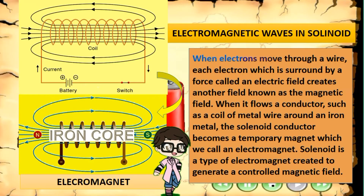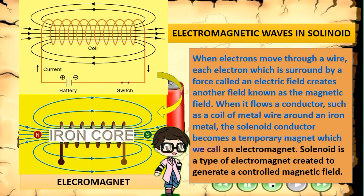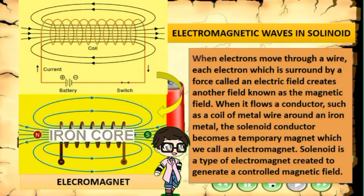When electrons move through a wire, each electron, which is surrounded by a force called an electric field, creates another field known as a magnetic field. When current flows through a conductor such as a coil of metal wire around an iron core, the solenoid conductor becomes a temporary magnet, which we call an electromagnet. A solenoid is a type of electromagnet created to generate a controlled magnetic field.